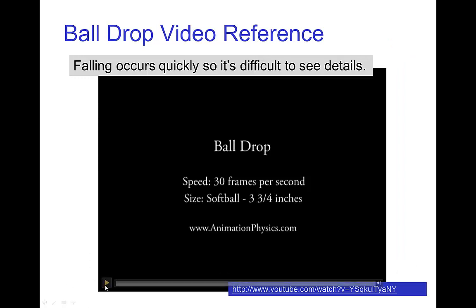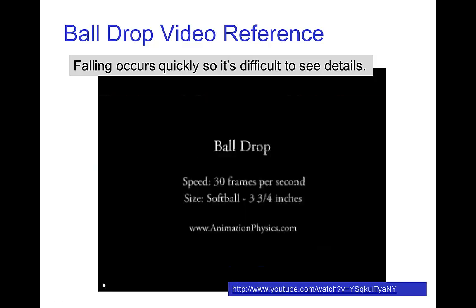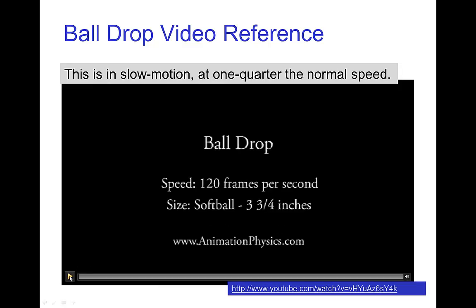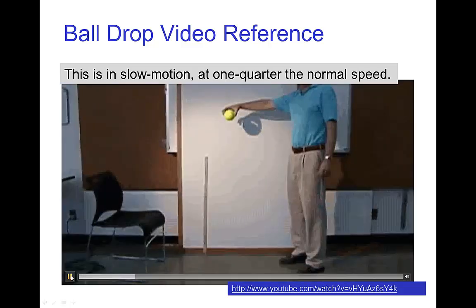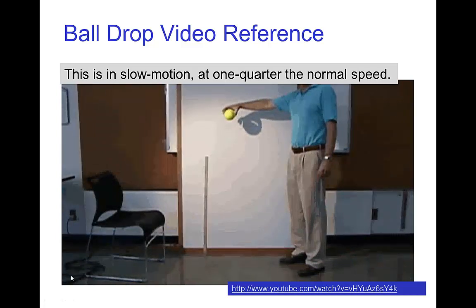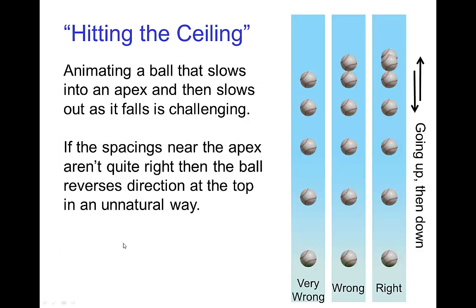Let's look at some simple video reference of what a ball drop might look like. That's pretty basic. Let's look at that in slow motion at one quarter speed and try to look at more detail. The spacing of the falling motion from the apex is critical to get those spacings to look believable — it's not quite enough to just make the spacings get larger and larger. You need to get something that looks accurate.